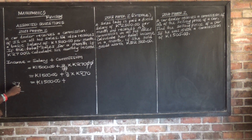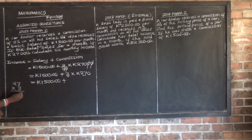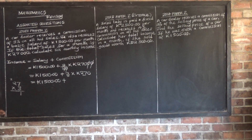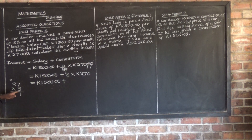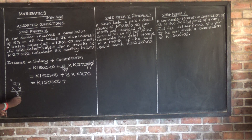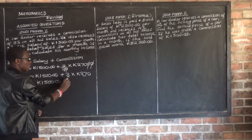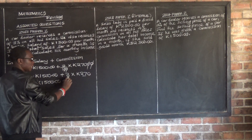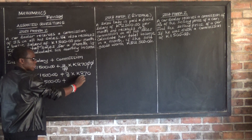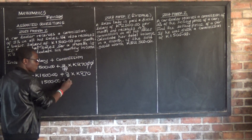Working through the multiplication: 3 times 7 gives 21, write 1 carry 2. Then 3 times 2 gives 6, plus 2 gives 8. So 3 times 27 equals 81, meaning 3% of $27,000 gives us $810 commission.